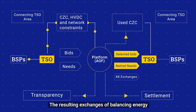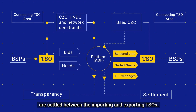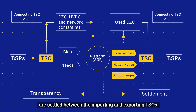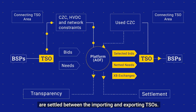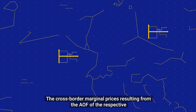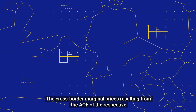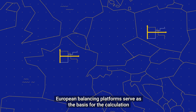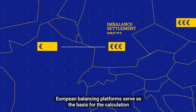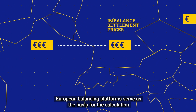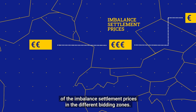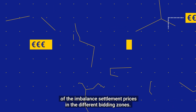The resulting exchanges of balancing energy are settled between the importing and exporting TSOs. The cross-border marginal prices resulting from the AOF of the respective European balancing platforms serve as the basis for the calculation of the imbalance settlement prices in the different bidding zones.